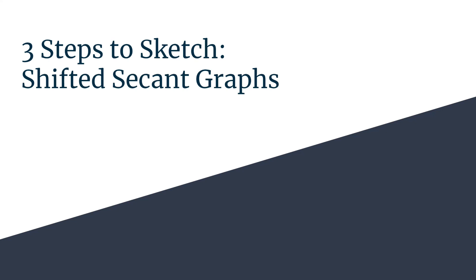Welcome to another 3 Steps to Sketch. Today we'll graph a shifted secant graph, y equals negative 3 secant of 2x plus pi over 4. We can see that we have the shift, this plus pi over 4 term is our key to knowing that we should use our shifted method, and we should notice that the b term, the 2, has been factored out, so we'll have to take that into account in our analysis.